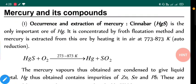It is concentrated by froth flotation method and mercury is extracted from this ore by heating it in air at 773 to 873 Kelvin temperature. It follows auto reduction process: HgS + O₂ → Hg + SO₂.